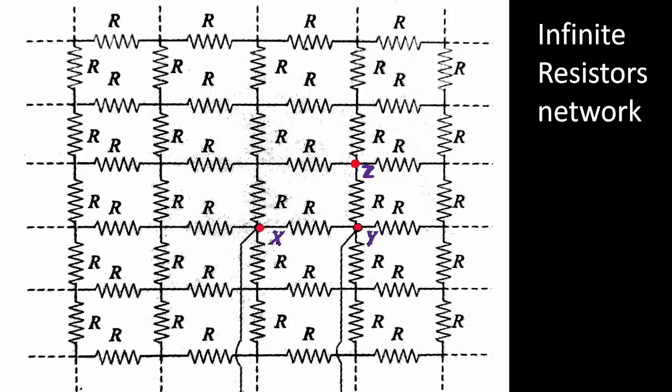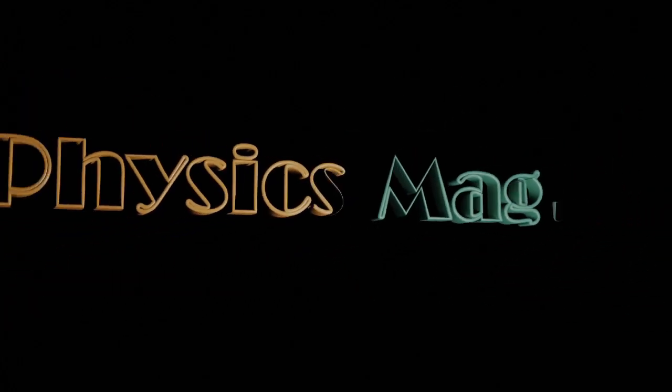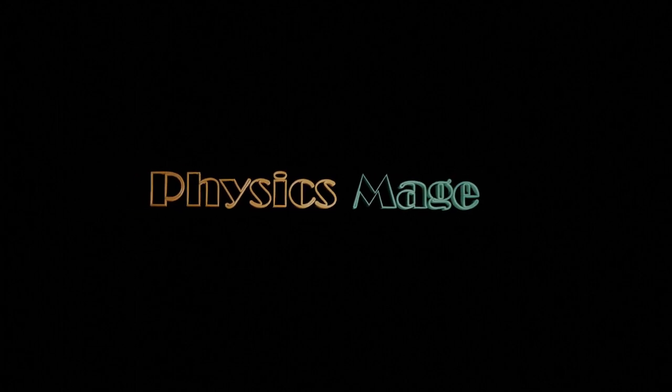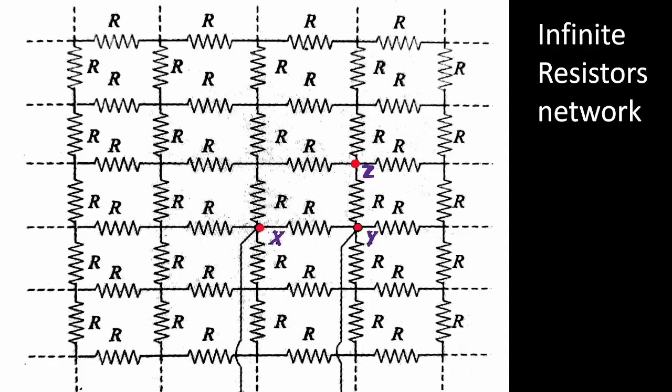Hello everyone, welcome to Physics Mage. This is an interesting problem from 'Problems in General Physics' by Irodov. So let's try to solve this problem. If we want to try using the successive reduction method — meaning recognizing resistors in series and parallel and simplifying — it becomes very difficult.